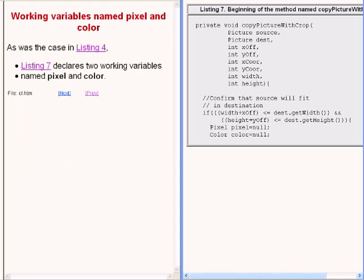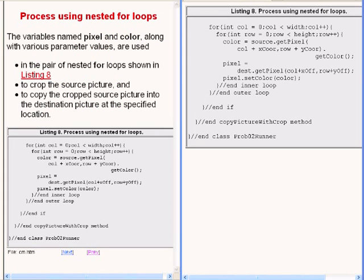As was the case with the method named cropAndFlip, the code on the right of your screen declares two working variables of type pixel and type color respectively. Those two variables, along with various parameter values, are used in a pair of nested for loops to crop the source picture and to copy the cropped source picture into the destination picture at the specified location.